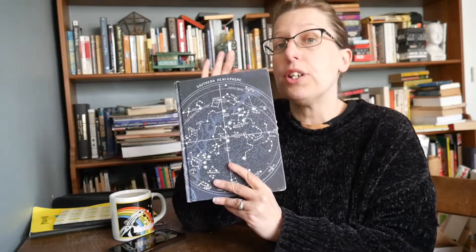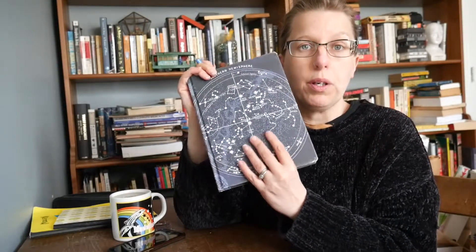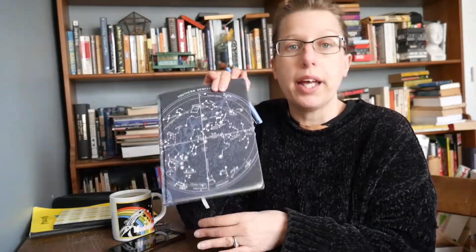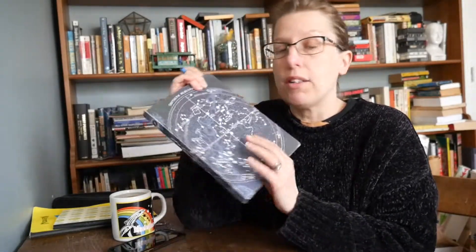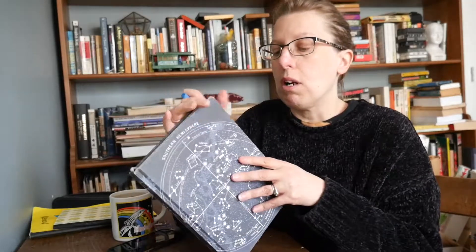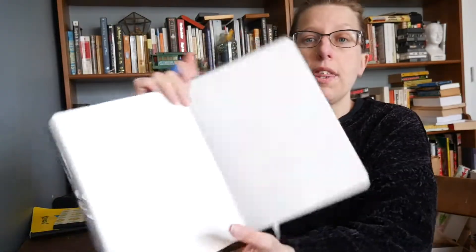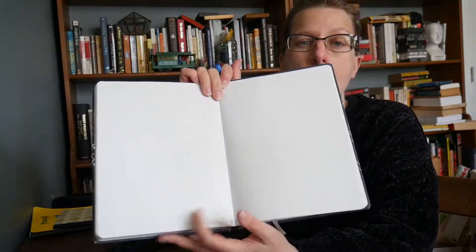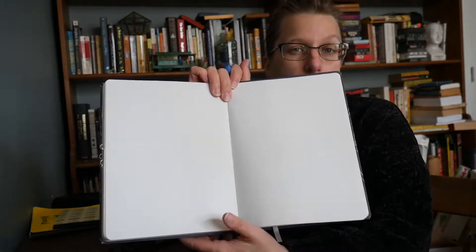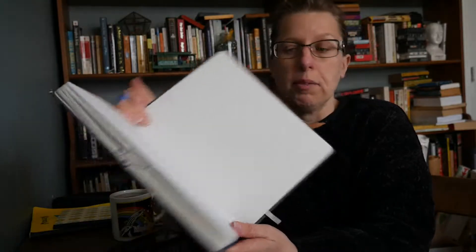My bullet journal is from Cognitive Surplus — I actually just ordered another one. They are a small business, really cool. They use as much recycled materials as they can, and it's just a good notebook — great for bullet journaling. I use the dot grid, which I like, but you can get it in lined, dot grid, grid, and so on. I'll link them down below, but you can almost always find them in my bullet journal videos.